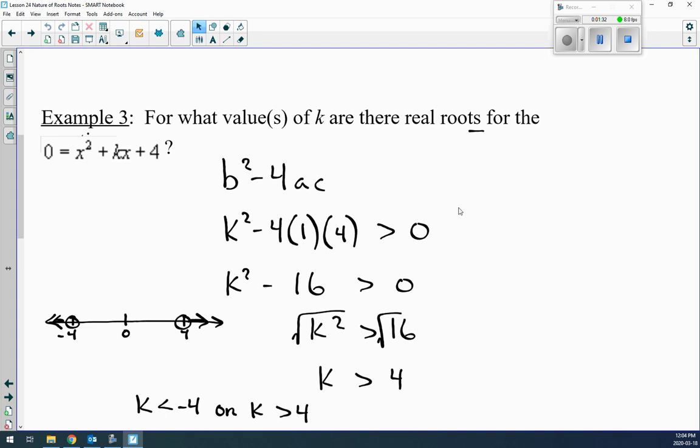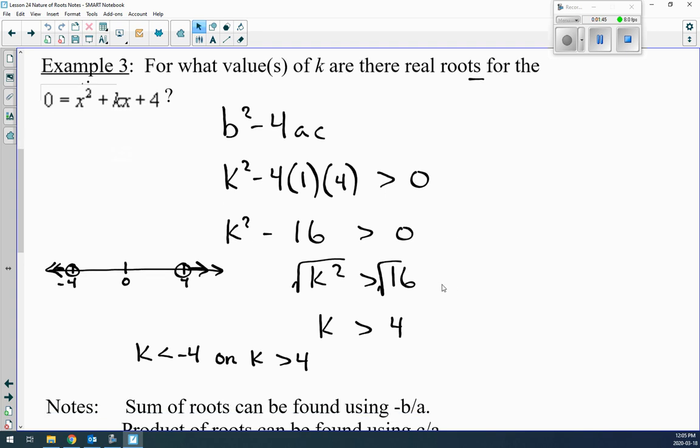So then we grab our discriminant, which is our b squared minus 4ac, and we plug in the numbers. So b is just k, so k squared minus 4 times 1 times 4. And we're making this greater than zero, because we want it to be positive. So then we get k squared minus 16 is greater than zero. Move the 16 over to the other side, make it positive, and take the square root of it.